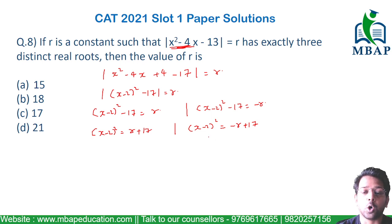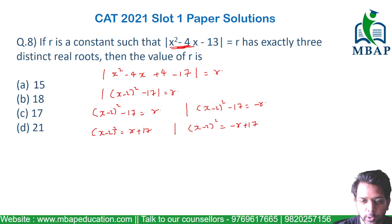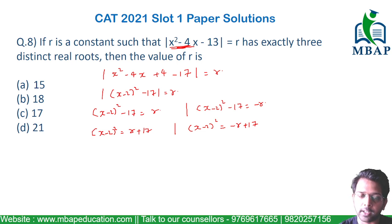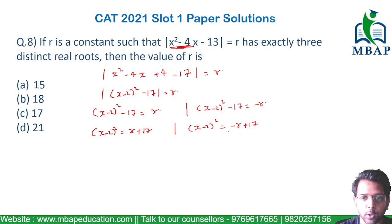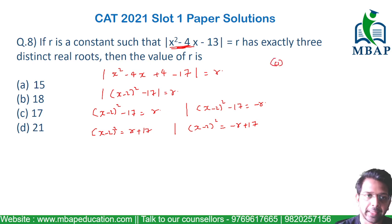Now the question is: for what value of r will this equation have three distinct roots? On one side you should get two roots and on the other side one root, or vice versa — the left side gives one root and the right side gives two roots — because overall you need exactly three distinct real roots. So possibly, on one side I want one of the roots to be zero.